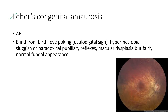Next is Leber congenital amaurosis. It is an autosomal recessive condition. The patient is blind from birth and will have a history of eye poking — the ocular digital sign. Other features include hypermetropia, sluggish or paradoxical pupillary reflex, and macular dysplasia but fairly normal fundal appearance.